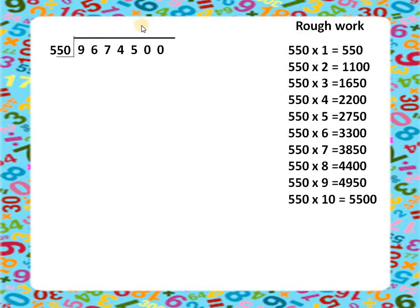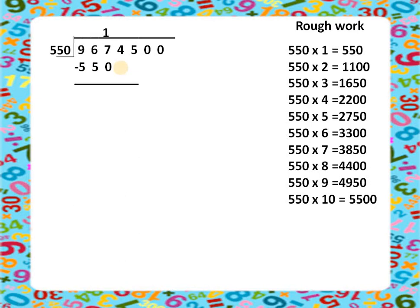We look at the first digits of the dividend — 967. Reading the table, 1100 is too big, so we take 1 as the quotient, giving 550. We write 550 and subtract: 7 minus 0 is 7, 6 minus 5 is 1, 9 minus 5 is 4. Our new remainder is 417.